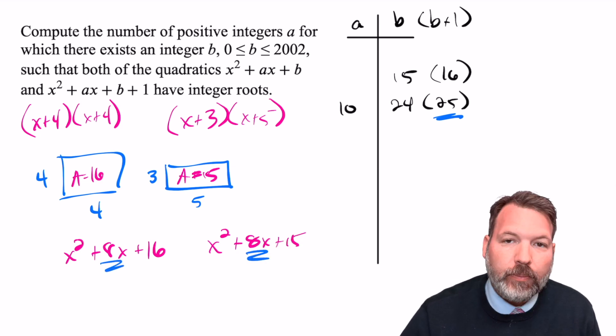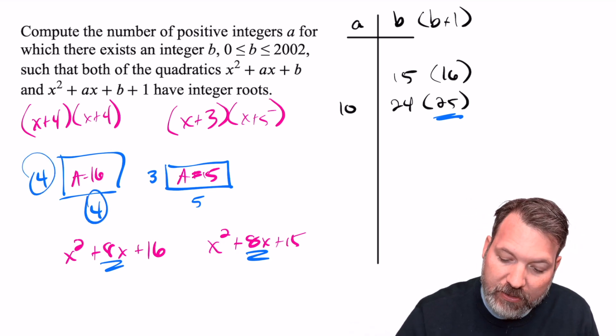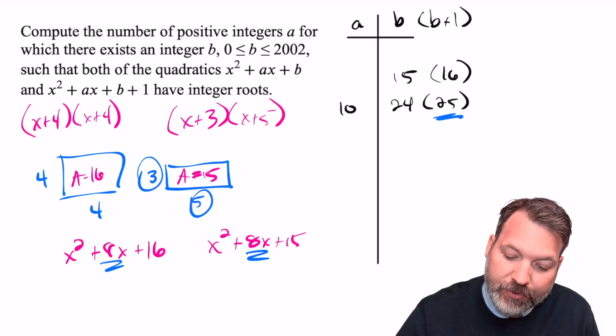But again, the key here is the middle term in each case matches the sum of those two dimensions, four plus four makes eight, and three plus five also makes eight.